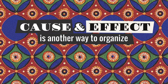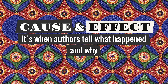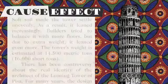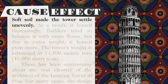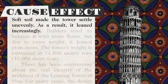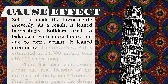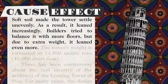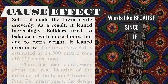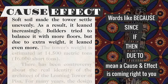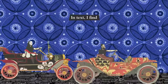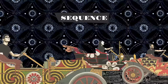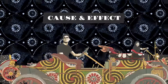Cause and effect is another way to organize — it's when authors tell what happened and why. 'Soft soil made the tower settle unevenly; as a result, it leans increasingly. Builders tried to balance it with more floors, but due to extra weight, it leans even more.' Words like because, since, if-then, and due to mean that cause and effect is coming right to you.